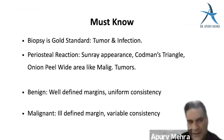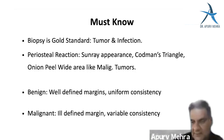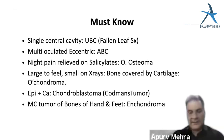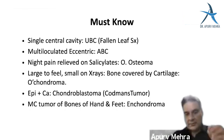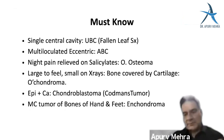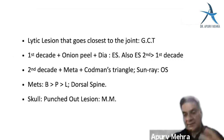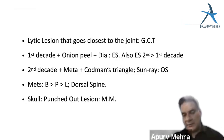Sun-ray appearance — pick osteosarcoma. For any tumor or infection, biopsy is the gold standard regardless of radiology. Benign lesions: well-defined margins, uniform consistency. Malignant lesions: ill-defined margins, variable consistency. Summary: unicameral bone cyst — single centric cavity with fallen-leaf fragment; ABC — multi-loculated eccentric; osteoid osteoma — night pain relieved by salicylates; osteochondroma — large to feel, small on X-ray; chondroblastoma — epiphyseal with calcification; enchondroma — commonest tumor of hand/foot bones.